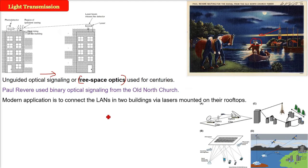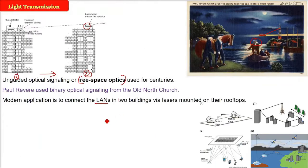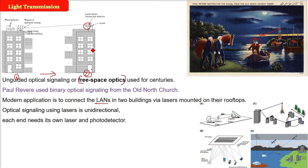What is the modern application — today's application? You can connect local area networks in two buildings using a laser mounted on their rooftop. These are two buildings. You have a focused laser and then you have a receptor called a photo detector, and both buildings have to have these. Here you have one building sending a laser, and here you have a photo detector. Same thing if you want to send from the other direction — you also need a laser on the left-hand side and a photo detector on the right-hand side. Optical signaling uses lasers that are focused and unidirectional. Each end needs its own laser and photo detector.